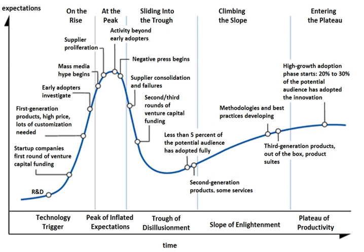The Hype Cycle is a branded graphical presentation developed and used by the American research, advisory and information technology firm Gartner to represent the maturity, adoption, and social application of specific technologies. The Hype Cycle provides a graphical and conceptual presentation of the maturity of emerging technologies through five phases.